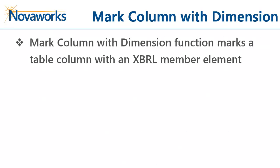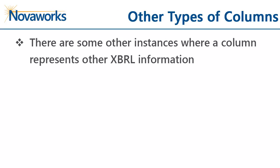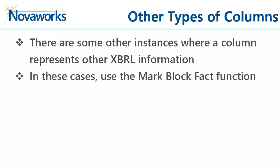The markColumnWithDimension function will mark the table column with an XBRL member element. This is used when a column represents the data for a component of a larger concept but has no date information. There are some rare instances where a column represents other XBRL information — for example, a column might represent children of an abstract line item element or data of a different type such as shares. If that is the case, you can always fall back to the markBlockFact function, which we'll cover later in this tutorial.